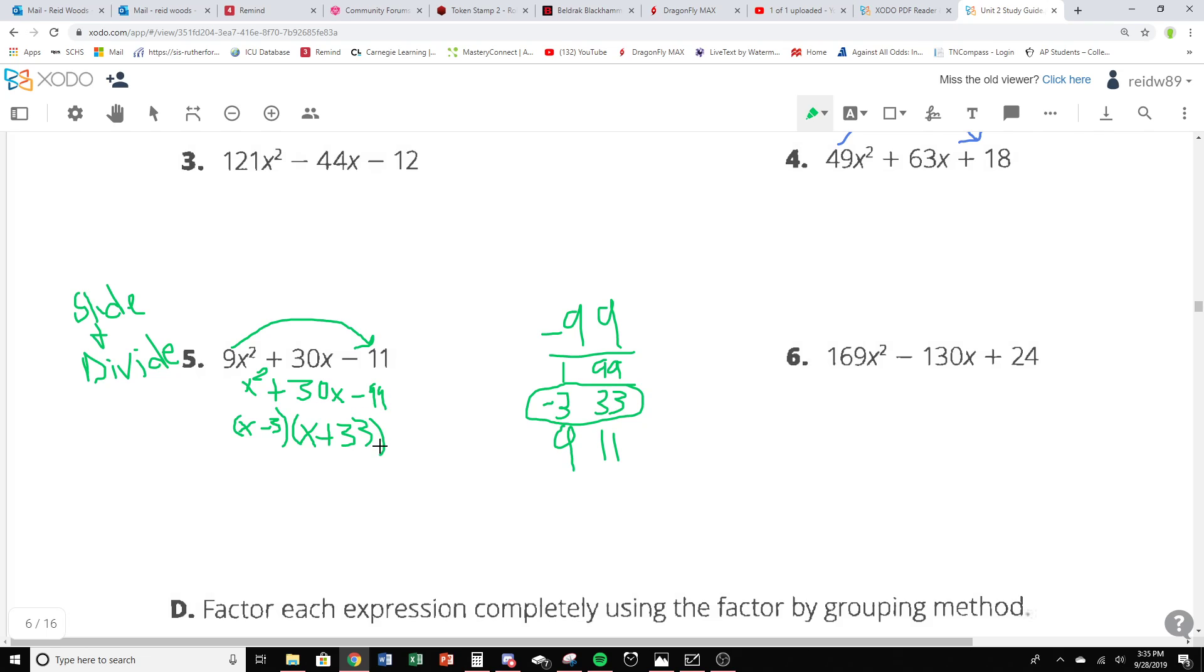So this is the step that's often missed: once you slide, some people forget and just stop here. But now we have to divide. So I'm going to be dividing that 9 back out. So the 9 is going to go here and here. And you'll notice for both of these that the 9 does not divide evenly.